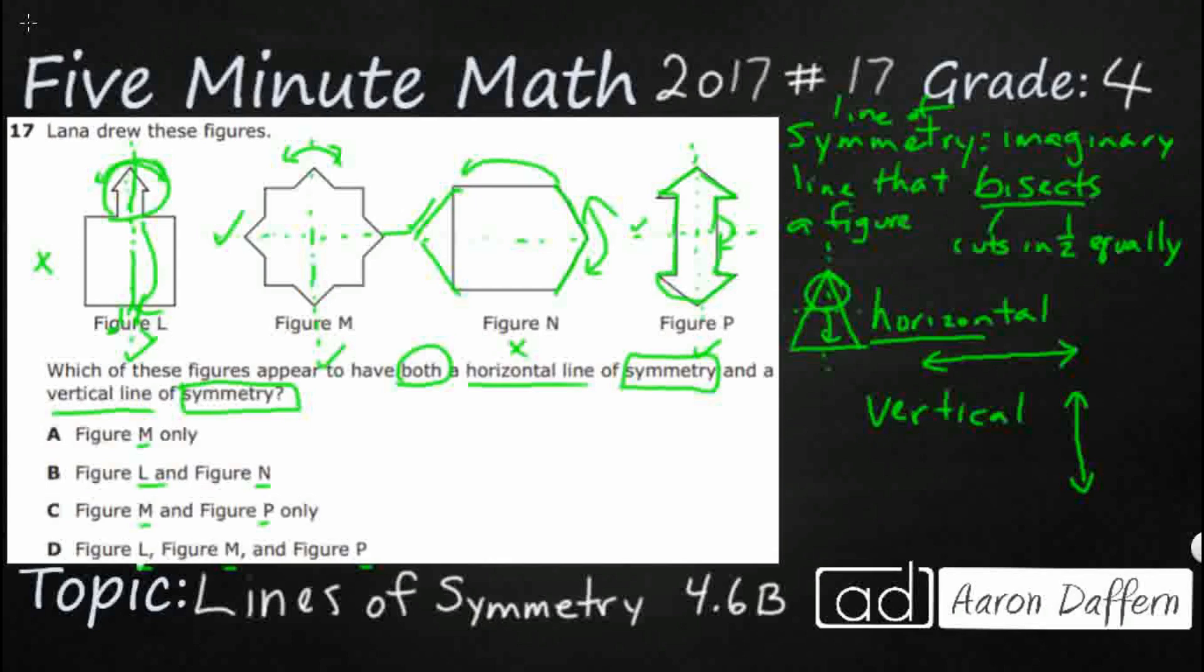So it looks like we've got two shapes that have both. Figure P has got both, and then figure M has got both. So we are looking at C.